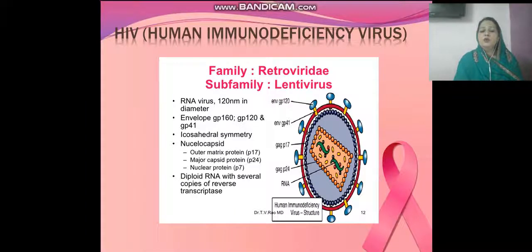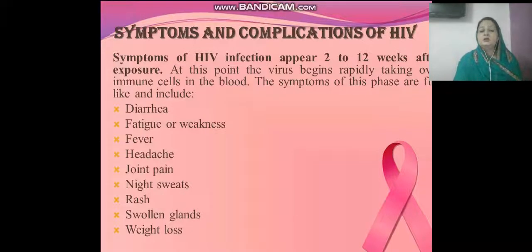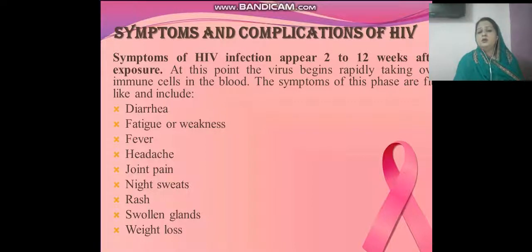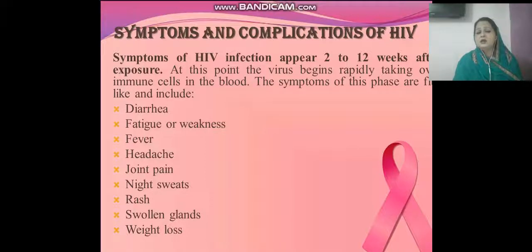HIV is a retrovirus belonging to the family Lentivirus. It is an RNA virus with reverse transcriptase properties. Symptoms appear 2 to 12 weeks after exposure, at which point the virus rapidly takes over the immune system — the body's defense mechanism. First symptoms include diarrhea, weakness, fever, joint pain, rash, swollen glands, and weight loss.